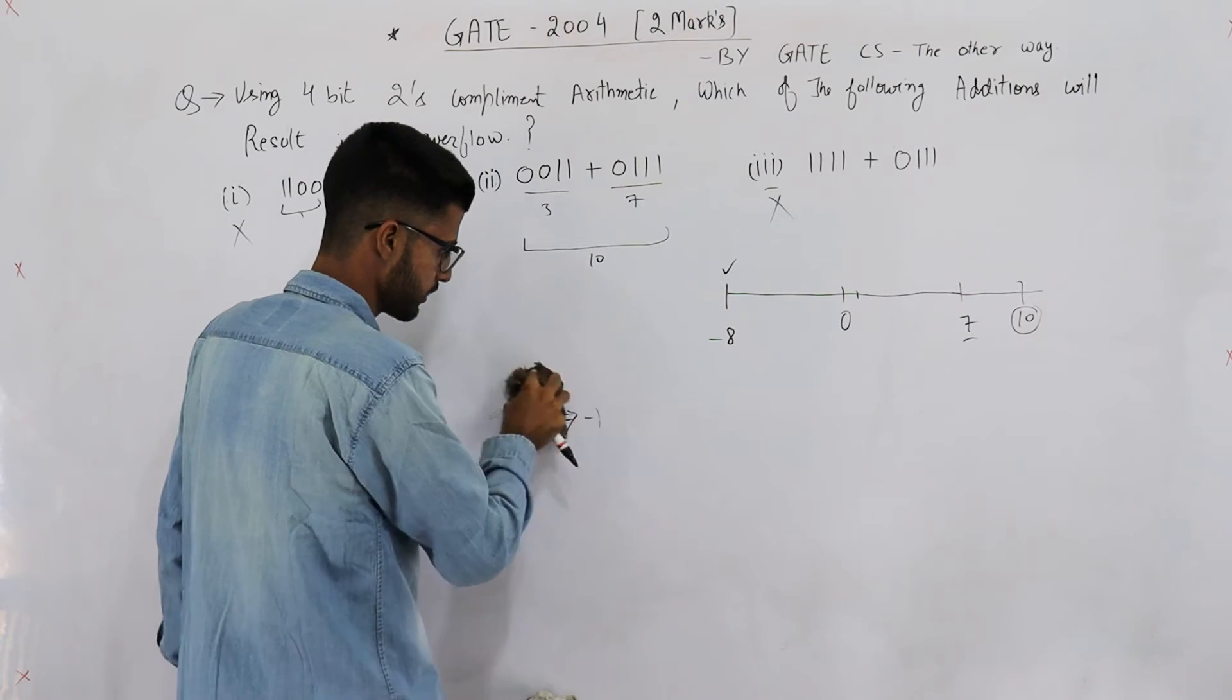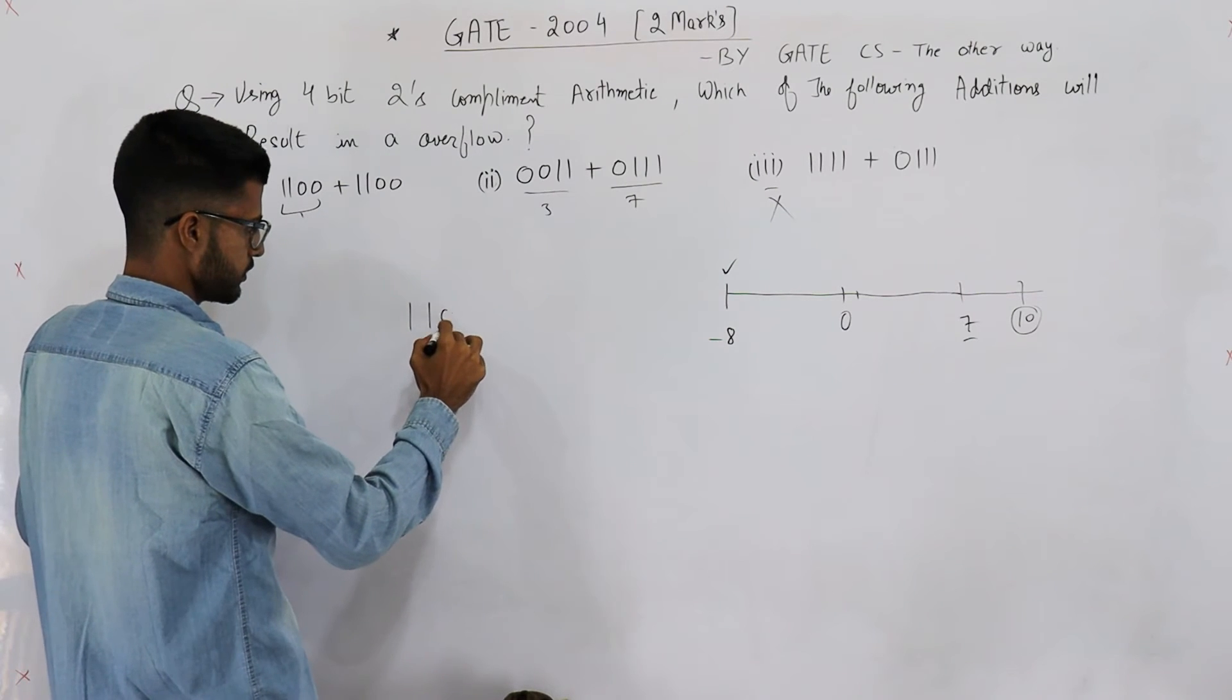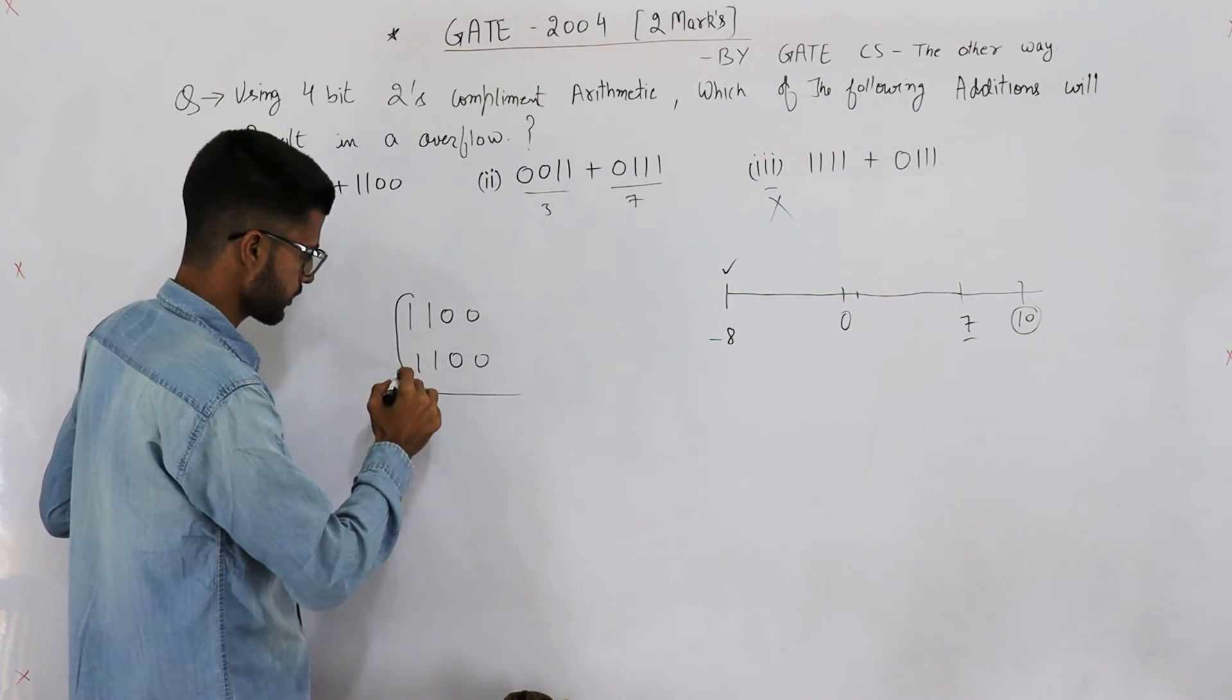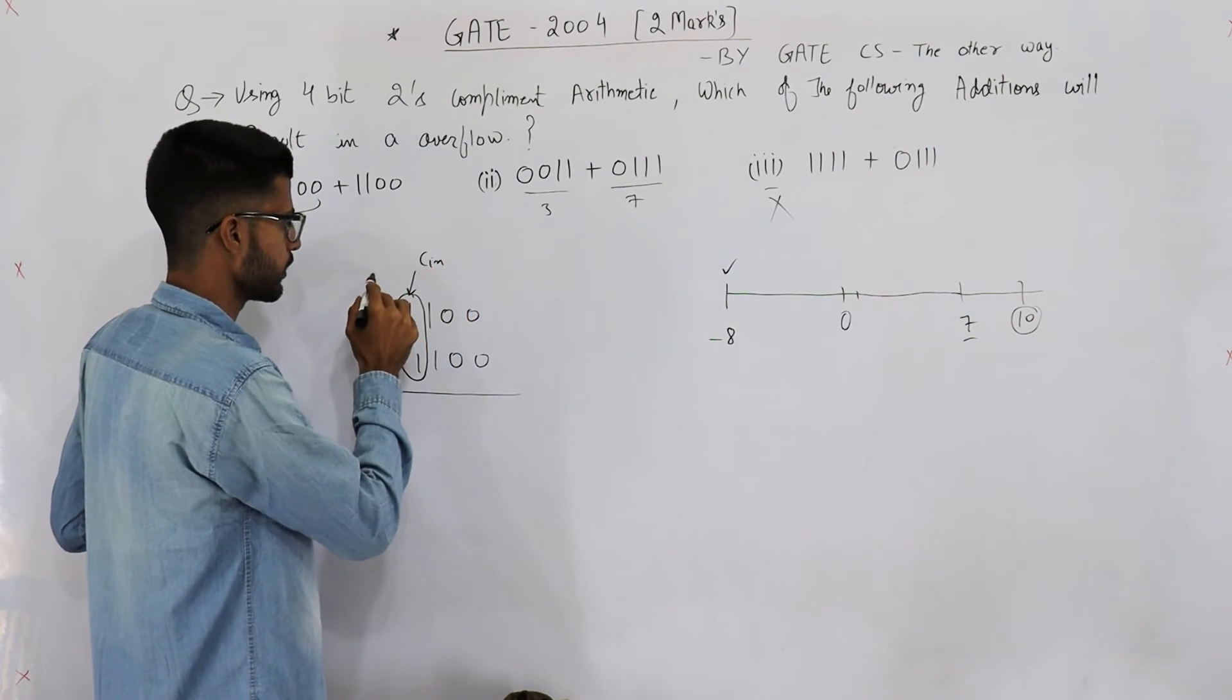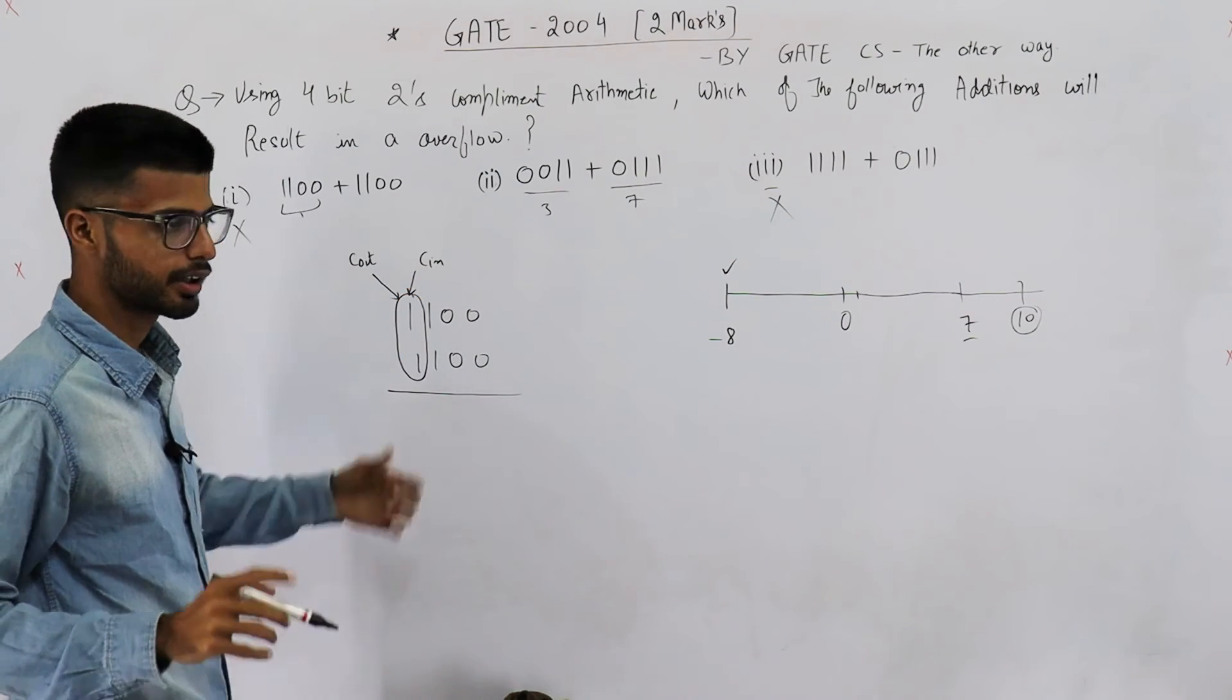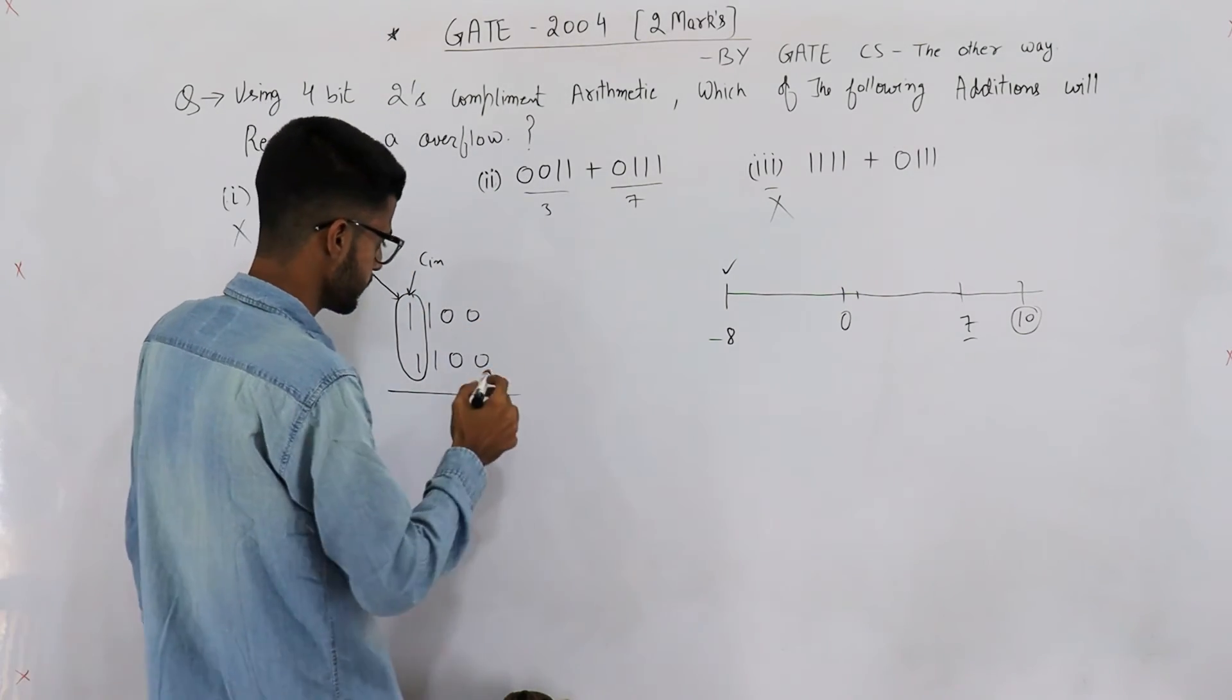So let's see one more method to solve such questions. Say part A is 1100 + 1100. Now when you add them, just take XOR of carry-in and carry-out to the last bit. You XOR these two values. If XOR comes out to be 1, there is overflow. If XOR comes out to be 0, there is no overflow.